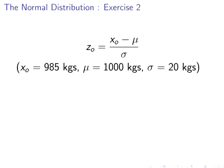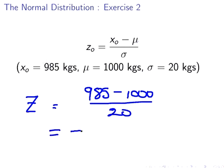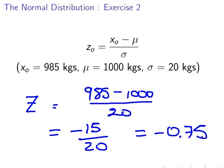Let's have a look at the second example here. Here it is 985, so the Z-score is 985 minus 1000 all over 20. That's equal to minus 15 over 20, and that is equal to minus 0.75.